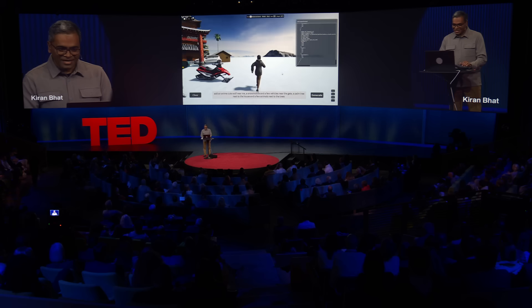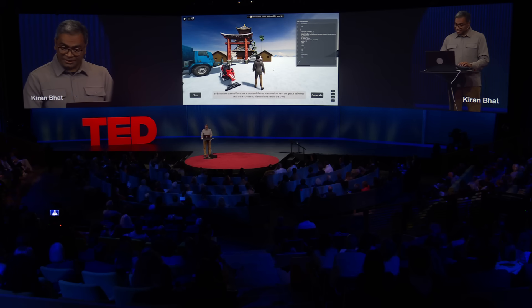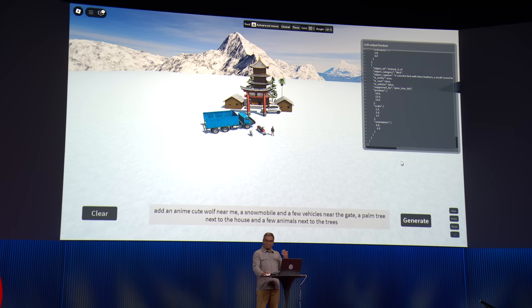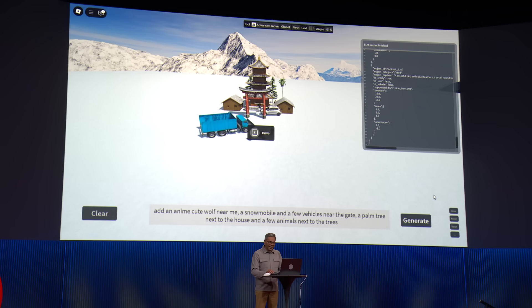Unlike images, because this is a 3D world built on a game engine, we can add effects to it. So we can actually make this much more immersive. Maybe I can make it snow, because it's a winter village. You'll start seeing snow in a second.